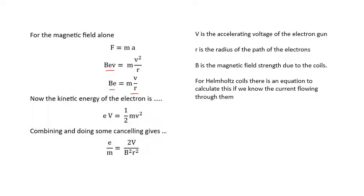The kinetic energy of the electron is eV equals a half mv squared. If we combine these two equations, we get e over m is 2V over B squared r squared.